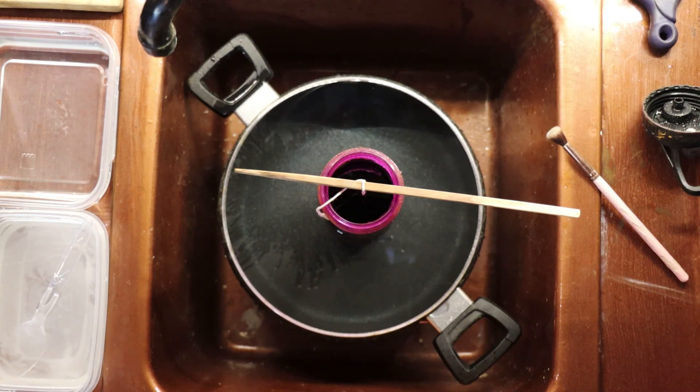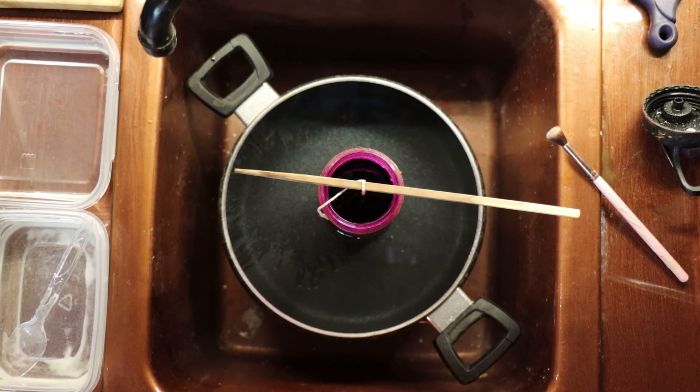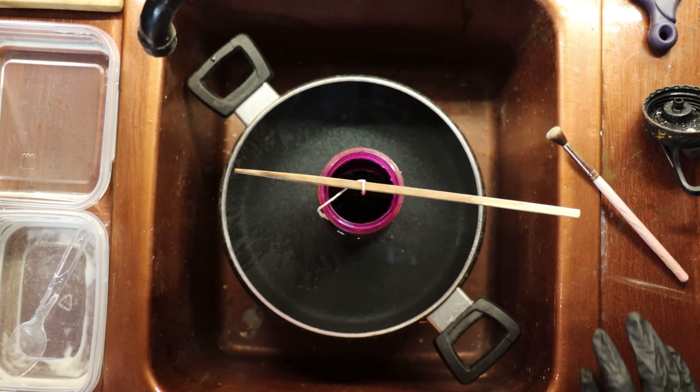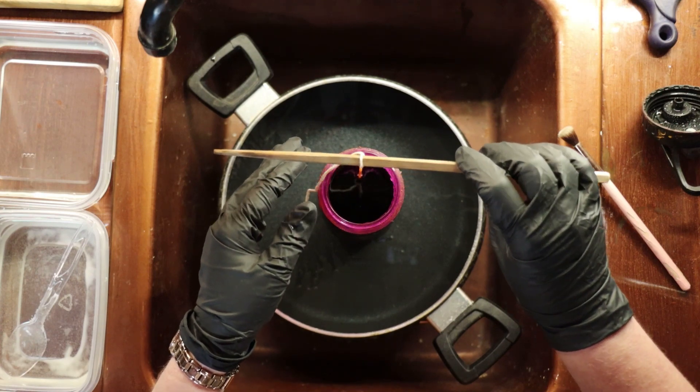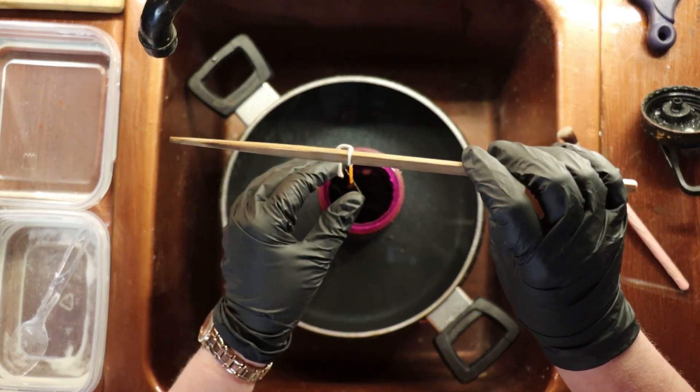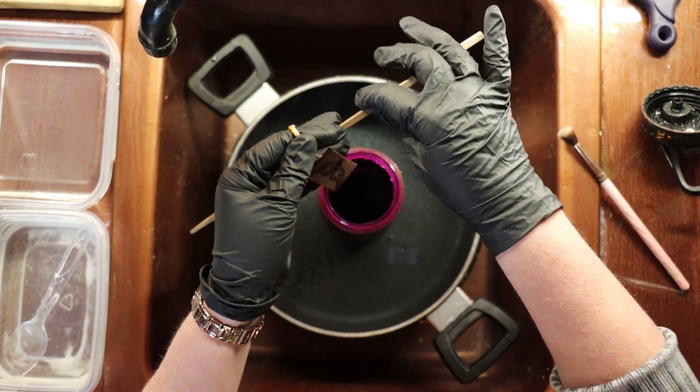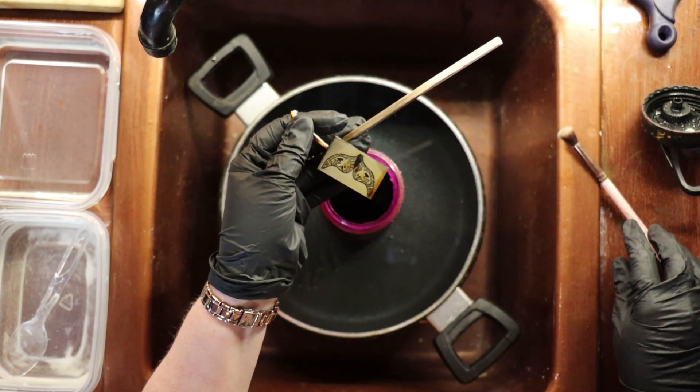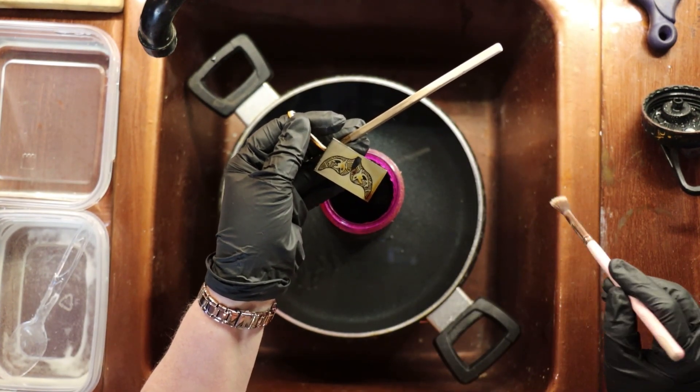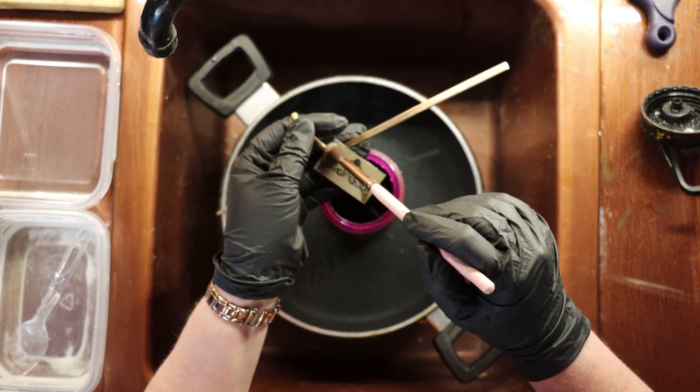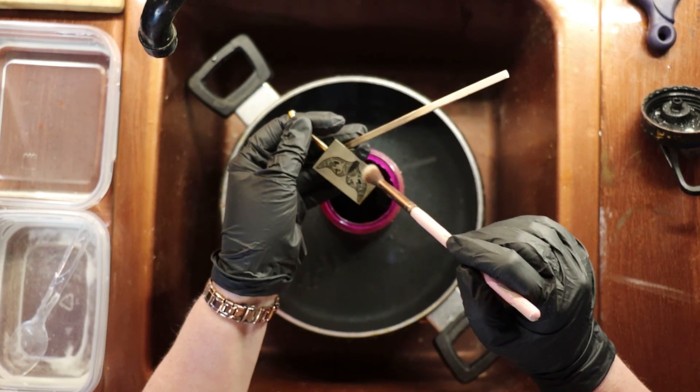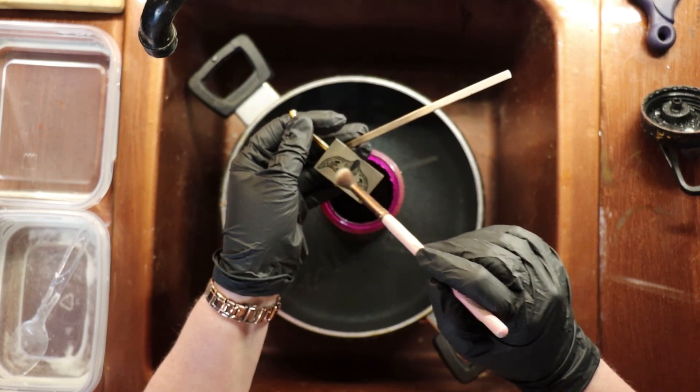So through the magic of video editing, it has been 20 minutes and now we can check the progress of the piece. So we can just remove it from the solution, and using the soft brush that we have, we just gently wipe off the solution. We do this to remove any residue that has collected on the piece, and this helps to get rid of the striations that sometimes occur.